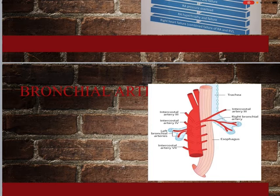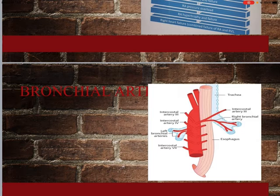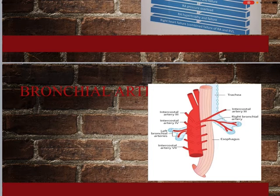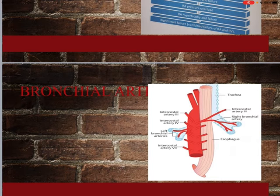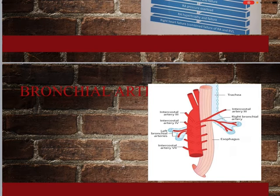The bronchial artery is a branch of the thoracic aorta supplying the trachea and lower bronchi. In pulmonary artery hypertension, the pressure is increased, leading to formation of anastomotic channels between the pulmonary artery and bronchial artery. These bronchopulmonary anastomotic collaterals are usually weak, and they rupture, leading to hemoptysis. This is the reason for hemoptysis in a mitral stenosis patient.